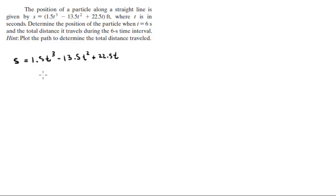The velocity is given by the derivative of this equation with respect to time, which comes out to be 4.5T² - 27T + 22.5. We need to find when does V equal to 0.